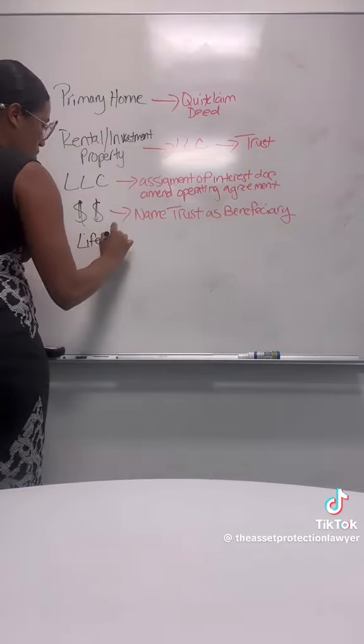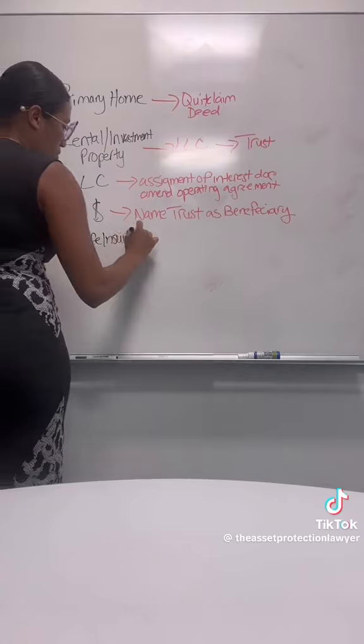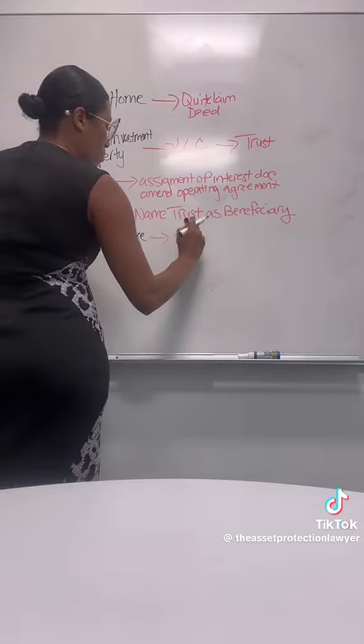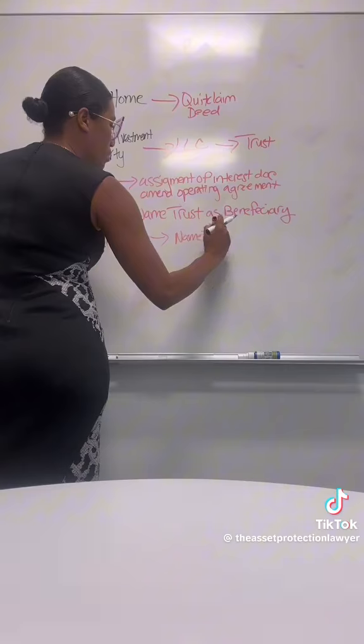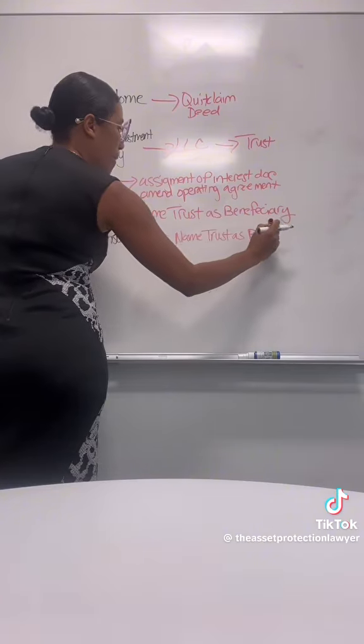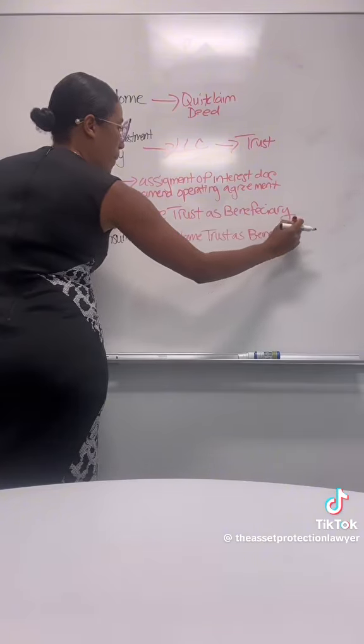For life insurance policies, you can list your trust as a beneficiary as well, so that upon your death, the proceeds of the life insurance policy go to the trust and get distributed according to the terms of the trust.